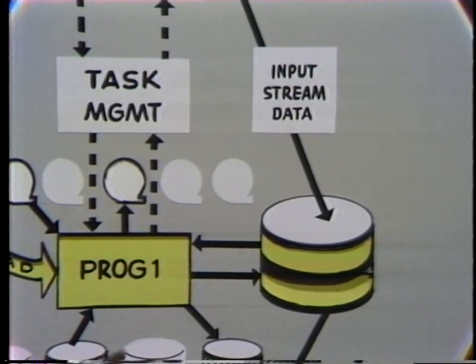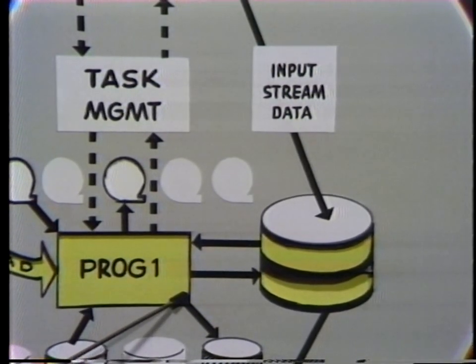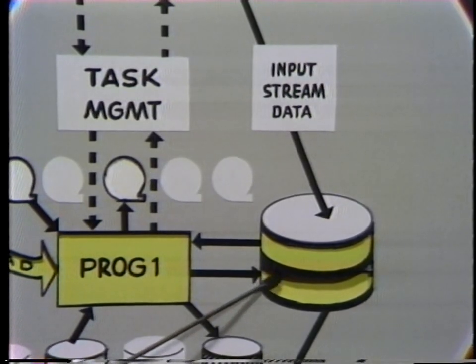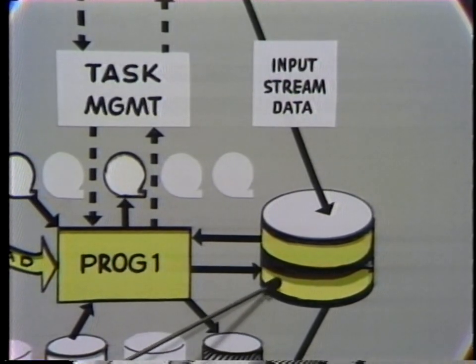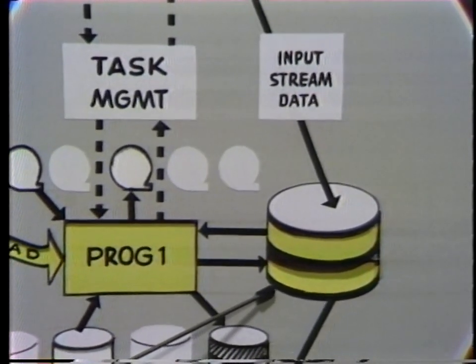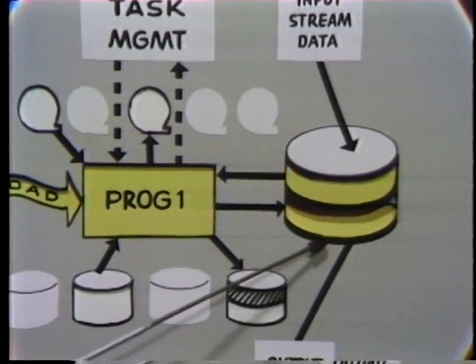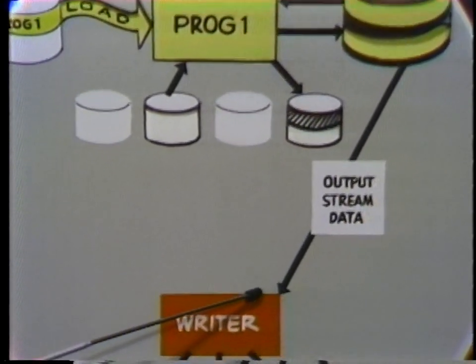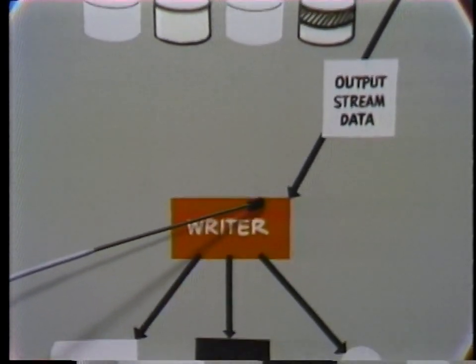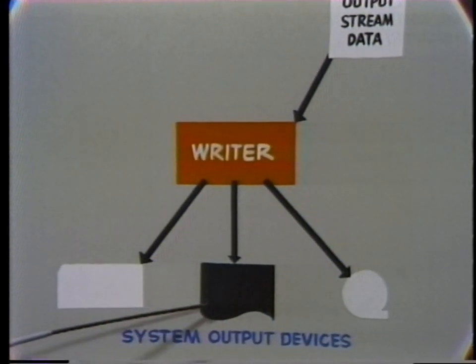But wait — we are not yet finished with this job. We have job A's output stream data sitting on the direct access device. That is the purpose of a job management routine called the writer. The writer reads the output stream data from a completed job and records the data on a system output device of your choice. You must specify the device in the DD card for that data set.